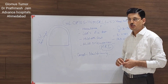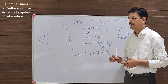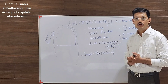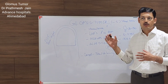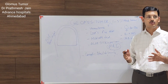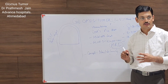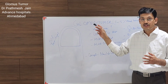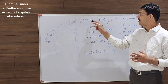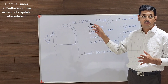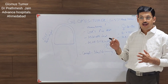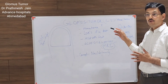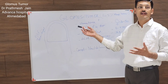We are discussing glomus tumor today. It's a unique pathology with a unique identity, and it is a diagnosis which is very commonly misdiagnosed in our OPDs. It is said that in a normal patient the usual difference between the onset of the symptom and the diagnosis is 3 to 4 years because it is not identified.